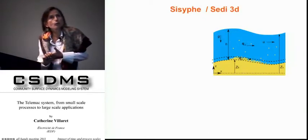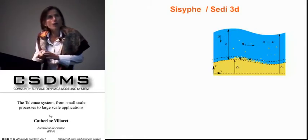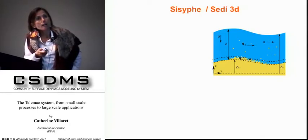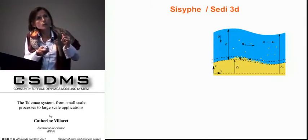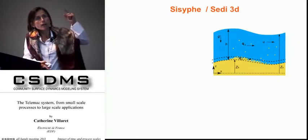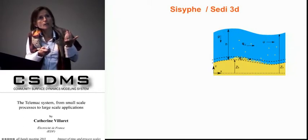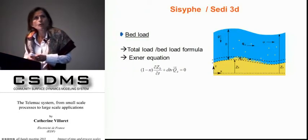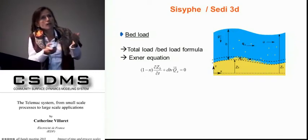Now I go to sediment transport, which is more familiar to me. This is how we sketch the problem: we have the flow acting on a mobile bed, and the water column is split into two zones. In a very thin near-bed layer you have bed load, and in the upper water column sediment is transported as a passive scalar in suspended load. This is the classical way to split the transport rate into bed load and suspended load.